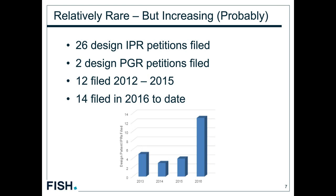Let's dig in more closely at the statistics for design patents at the PTAB. You may not have heard about many design patent decisions because there just haven't been that many petitions filed — 26 total IPR petitions filed for design patents, compared to several thousand directed to utility subjects. Two PGRs of design patents have been filed as well, which can be advantageous because of additional grounds of unpatentability available in PGR proceedings.